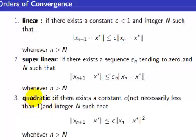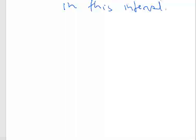To understand quadratic convergence, let's take another example. Consider the sequence xn with general term 1 over 2 to the 2 to the power n. We know that this sequence converges to 0 as n tends to infinity.